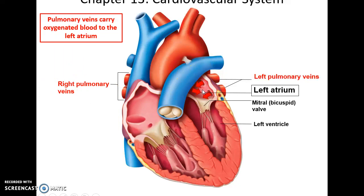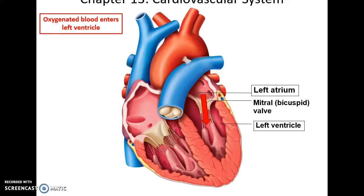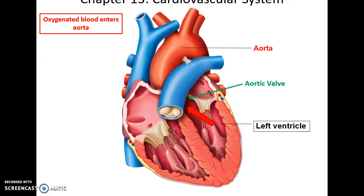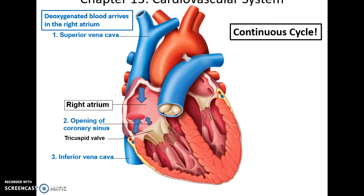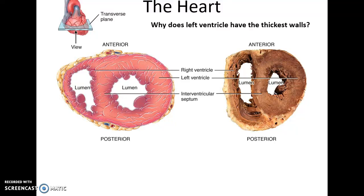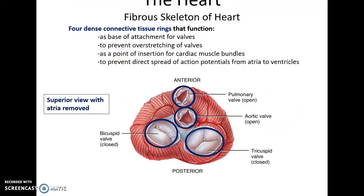The oxygenated blood then arrives via the left and right pulmonary veins into the left atrium, passes through the bicuspid valve into the left ventricle. When the left ventricle contracts, it sends the blood through the aortic valve into the aorta, entering the systemic circulation and bringing oxygen to all the tissues of the body. The left ventricle has a much thicker wall than the right ventricle because it needs a more forceful contraction to send blood throughout the entire body, while the right ventricle only has to send blood to the nearby lungs.